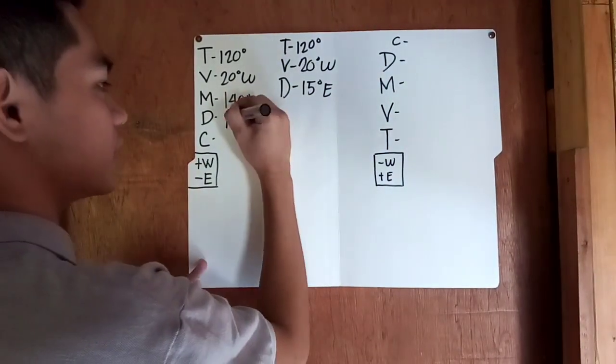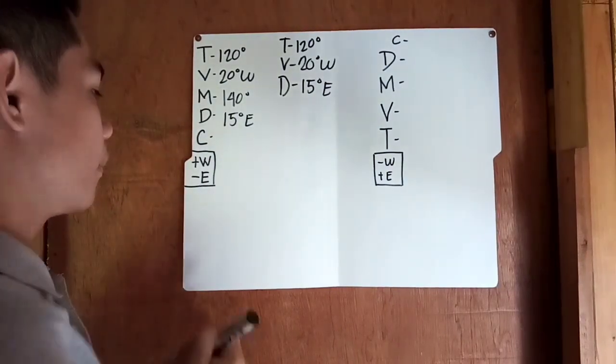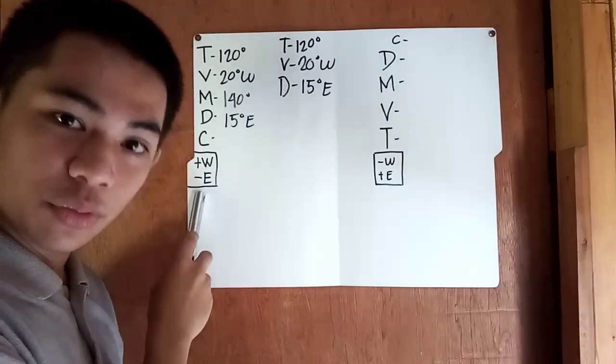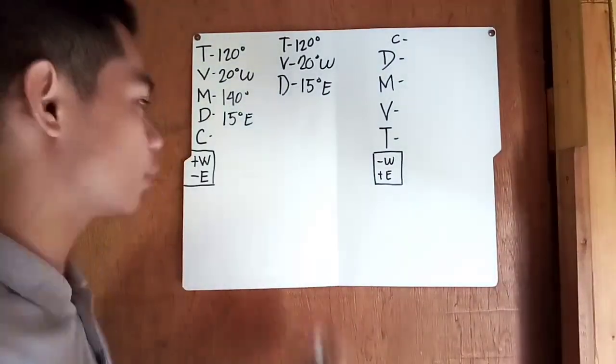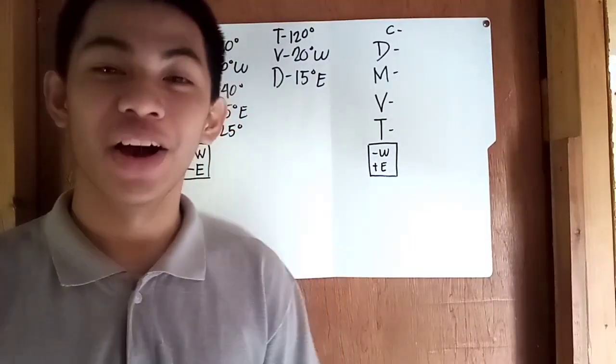And getting the compass north we will apply the golden rule which is if it is east we will just subtract it. So 140 minus 15 equals 125 degrees.